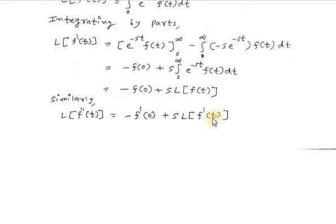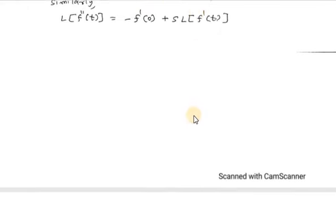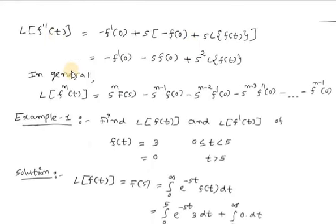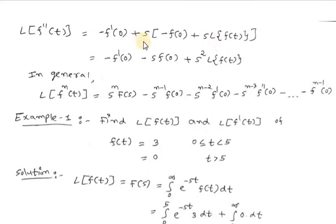Now replacing Laplace of f'(t) by -f(0) + s·Laplace of f(t), we have Laplace of f''(t) equals -f'(0) plus s·(-f(0) + s·Laplace of f(t)), which gives -f'(0) minus s·f(0) plus s²·Laplace of f(t).